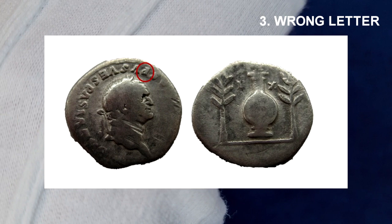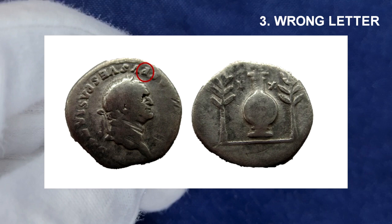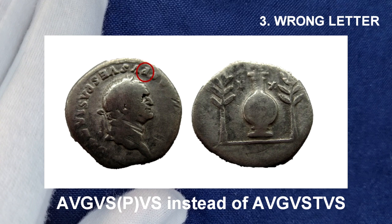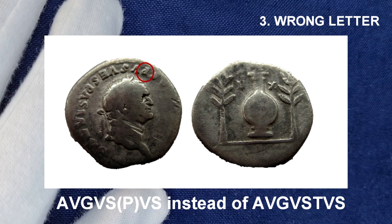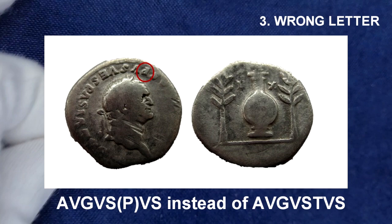The next, third type of error is a wrong letter. I'd like to show you an example from David Atherton's collection. Here is a Divus Vespasian denarius struck by Titus, with an interesting engraver's error in the obverse legend. The obverse legend reads 'Divus Avgvspvs Vespasianus', with the letter P instead of T in 'Avgvstvs'. Almost certainly unique to this one die — a very rare error from the Rome Mint and a very unusual coin.